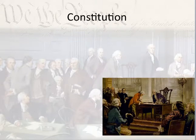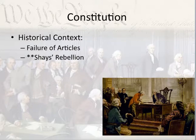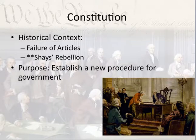Now, that brings us to the Constitution. Hopefully you realize from this discussion on the Articles of Confederation that they didn't work. The historical context of the Constitution is the failure of the Articles and Shays' Rebellion, which is the culmination of those failures. The purpose of the Constitution is to establish a new procedure for government, one that deviates from the Articles. They had initially met with the intention of just amending the Articles, but quickly realized that wasn't going to happen, so they closed the windows, shut the doors, stuck themselves in a smelly old room in the middle of July, and drew up the Constitution.